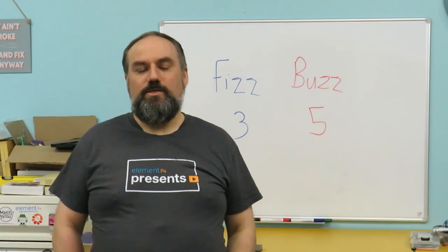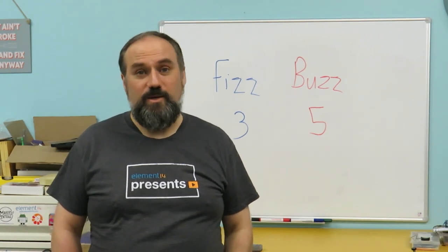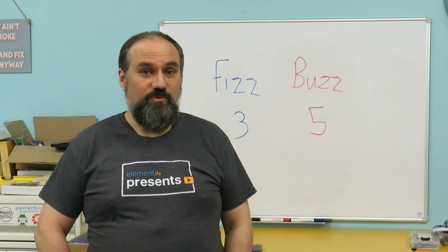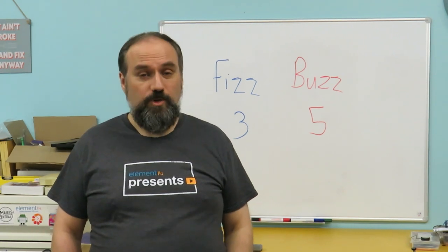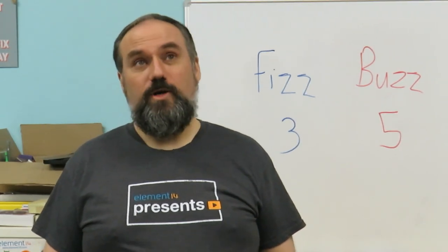FizzBuzz is a counting game designed to help you learn your three and five times tables. You start by counting from one and then two, but when you get to three, you say Fizz and then four. And then when you get to five, you say Buzz and every time you hit a multiple of three or five, you say Fizz or Buzz. So 1, 2, Fizz, 4, Buzz.